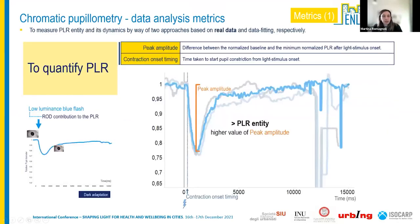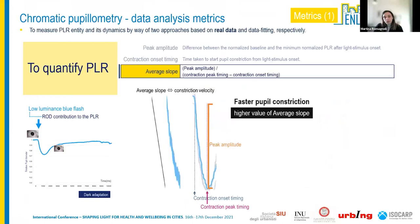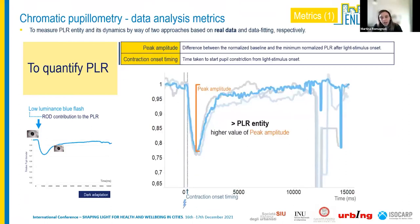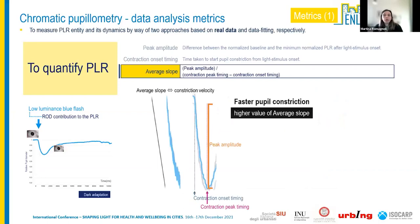Peak amplitude is defined as the difference between the normalized baseline and the minimum normalized pupil response curve after light stimulus onset. Contraction onset timing is the time taken to start pupil constriction from light stimulus onset. A larger PLR is indicated by higher peak amplitude values. The average slope — the ratio between peak amplitude and the time difference from contraction timing to onset — is indicative of pupil constriction velocity: higher slope values mean faster constriction.